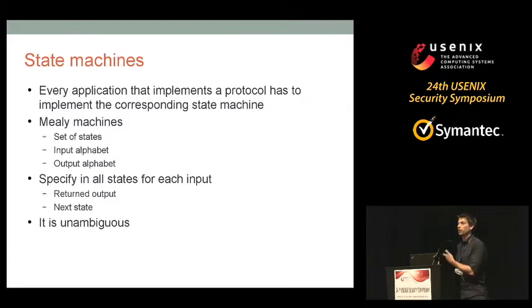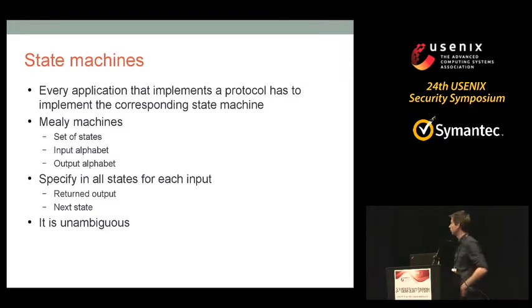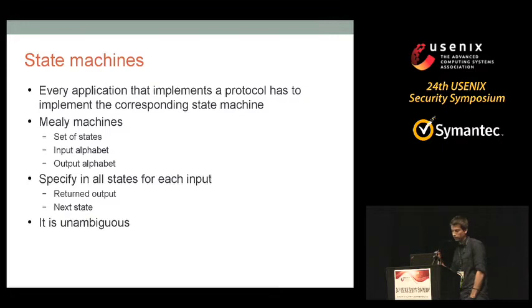A Mealy machine consists of a set of states, an input alphabet of messages that can be sent to the system, and an output alphabet of messages the system can return. For every state and each input, it defines what outputs will be returned and what the next state is — either staying in the current state or transitioning to the next. This is an unambiguous way to specify state machines, which would be good to include in protocol specifications so people don't have to derive them themselves.